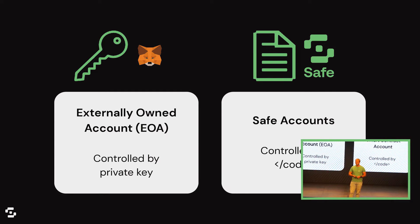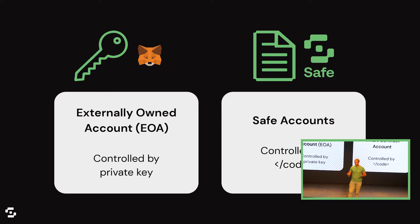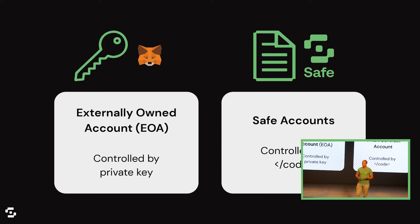Account abstraction is not really inventing smart contract accounts — they've been around forever. SAFE has been building a smart contract account for four years. It's really about leveling the playing field between those and making it easier for users or developers to adopt smart contract accounts and optimize for them.